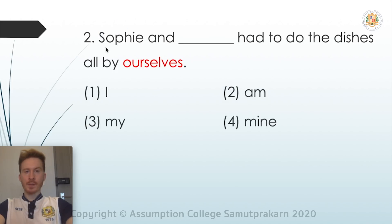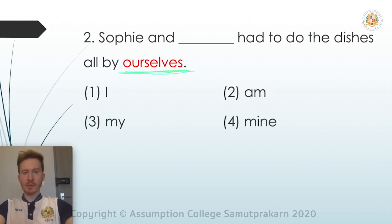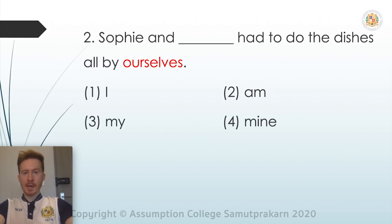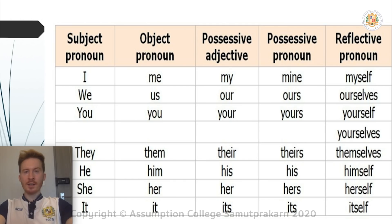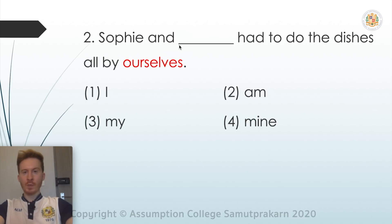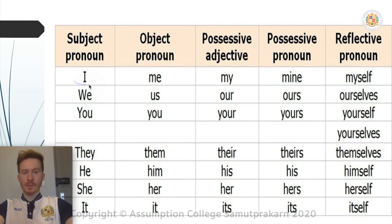Let's look at the second question: 'Sophie and ___ had to do the dishes all by ourselves.' Ourselves is a reflexive pronoun suggesting two people are involved. Sophie is a subject, so the blank must also be a subject pronoun. The potential answers are I, am, my, and mine — so we must find a subject pronoun to fill the blank. Use this table to help you.